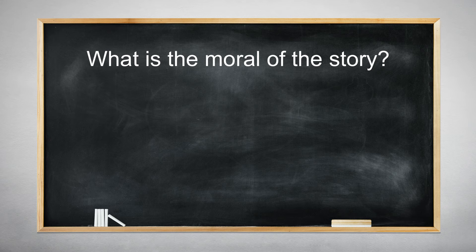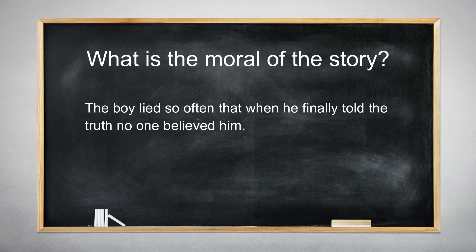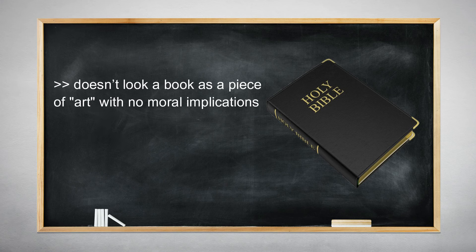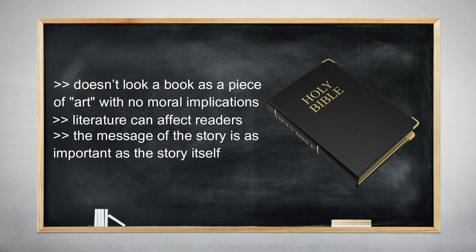Did you figure out the theme? The boy lied so often that when he finally told the truth, no one believed him. The moral of the story is: no one believes a liar, even when he speaks the truth. The philosophical approach doesn't look at a book as a piece of art with no moral implications. It says that literature can affect readers, whether subtly or directly, and considers that the message of the story is at least as important as the story itself. Remember to think about using the philosophical approach when you're looking at the theme of a story, or when you're reading a story that is obviously centered on a specific moral or truth.